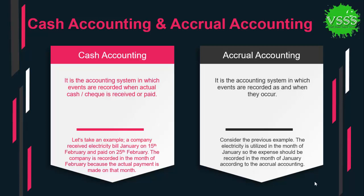On the other hand, accrual accounting is the accounting system in which events are recorded as and when they occur. Consider the previous electricity bill example: the electricity is utilized in the month of January, but the bill comes in February. According to accrual accounting, the expense should be recorded in January because the electricity was consumed in January, not February.